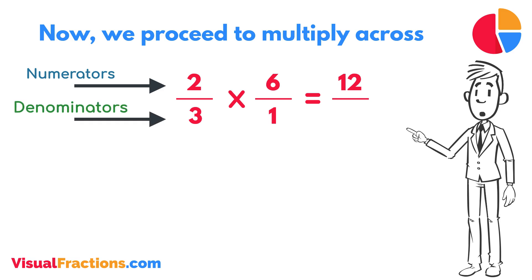Next, multiply the denominators, one times three equals three. We now have a new fraction, twelve-thirds.